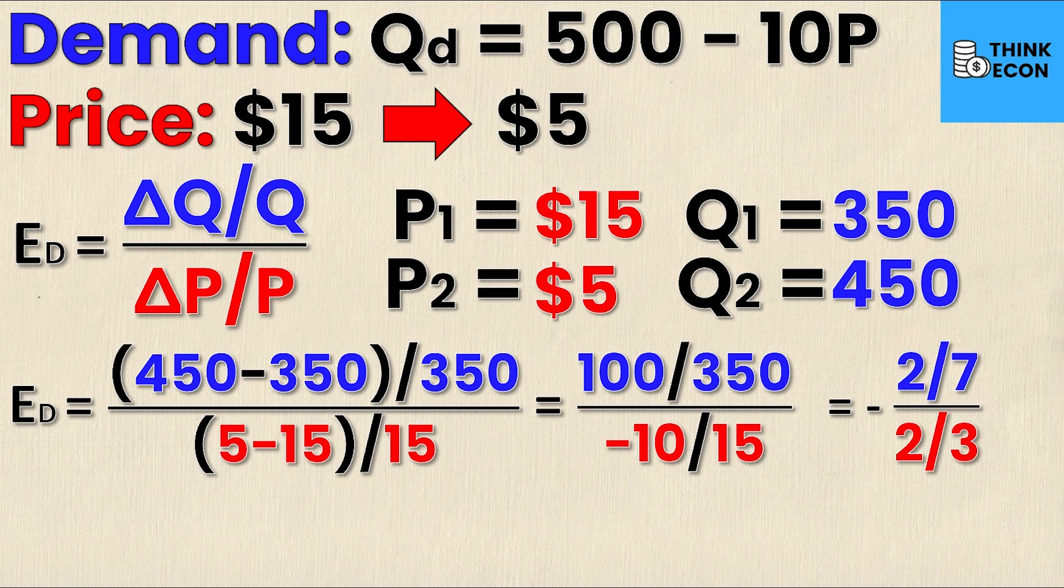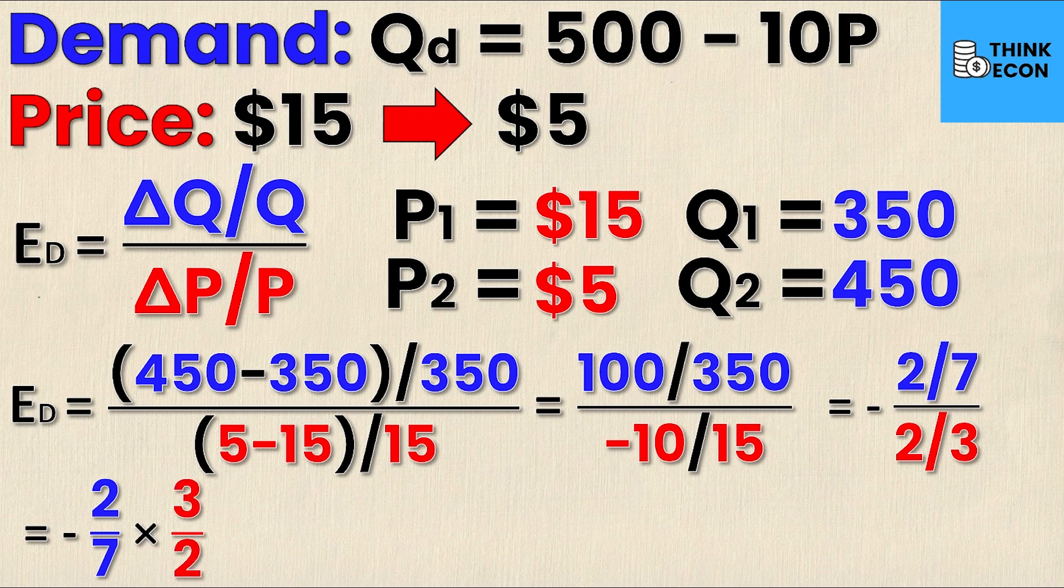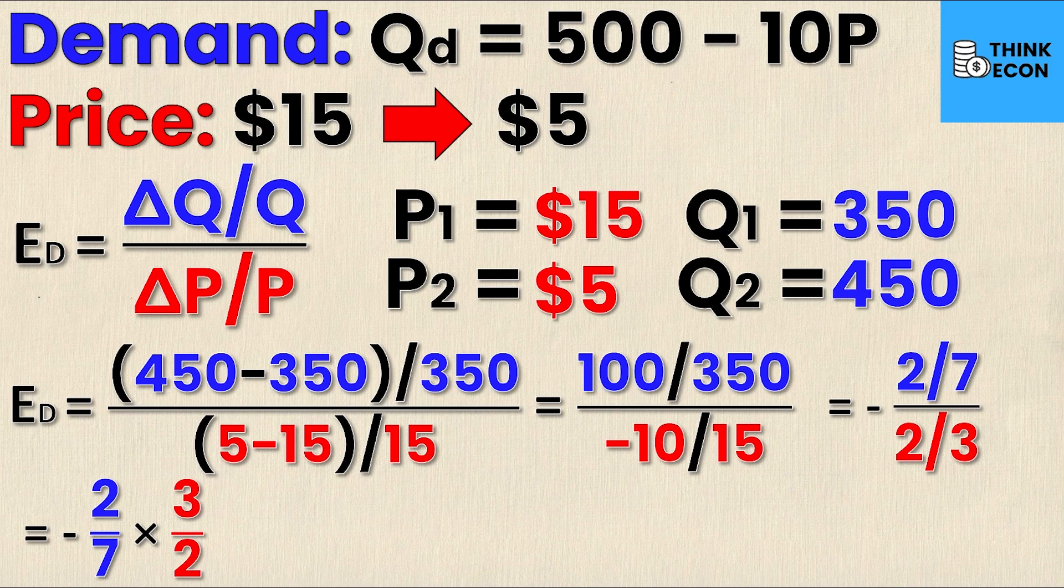So now I've got two sevenths over two thirds, and that might seem confusing because we have a fraction over another fraction. But we know that we can turn this into a multiplication problem by simply multiplying by the reciprocal. So I have my negative two sevenths on the top, and instead of dividing by two thirds I can turn it into a multiplication problem if I flip the two thirds over for its reciprocal of three halves. Now I can just multiply top times top, bottom times bottom.